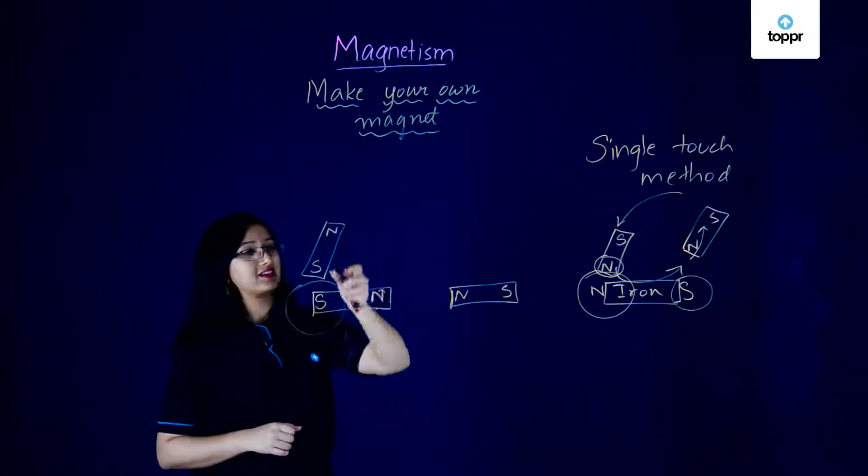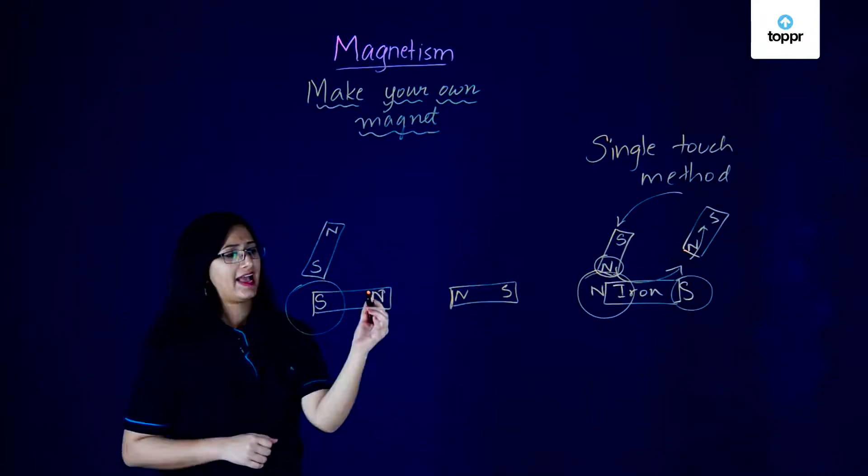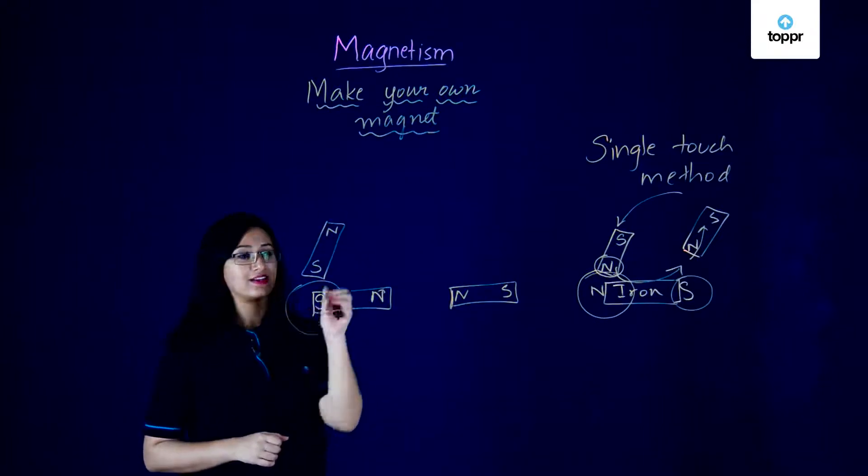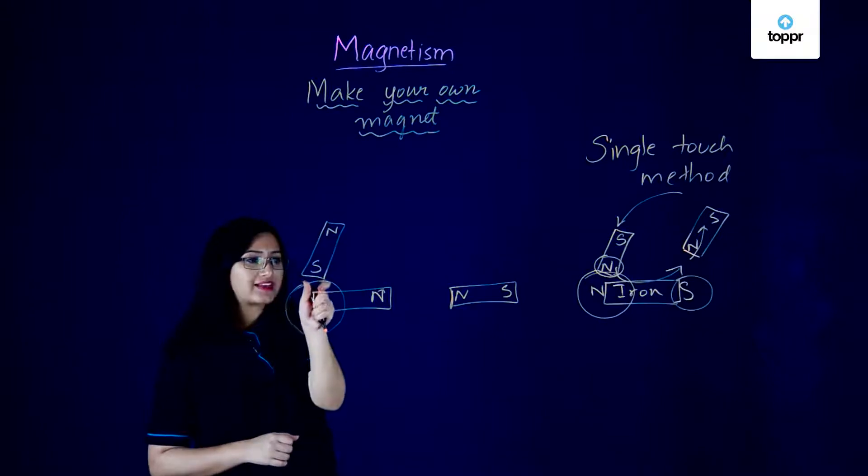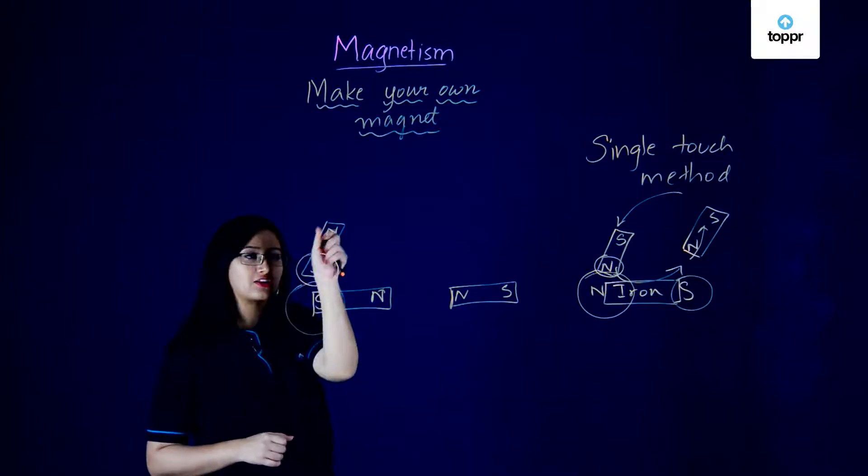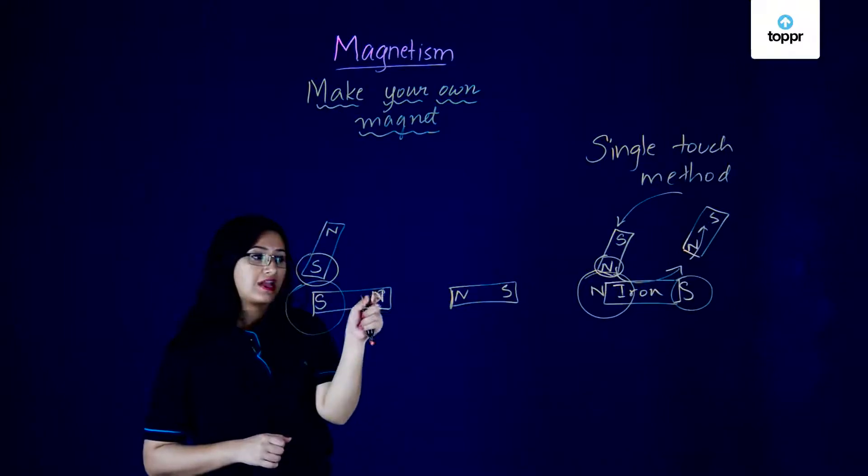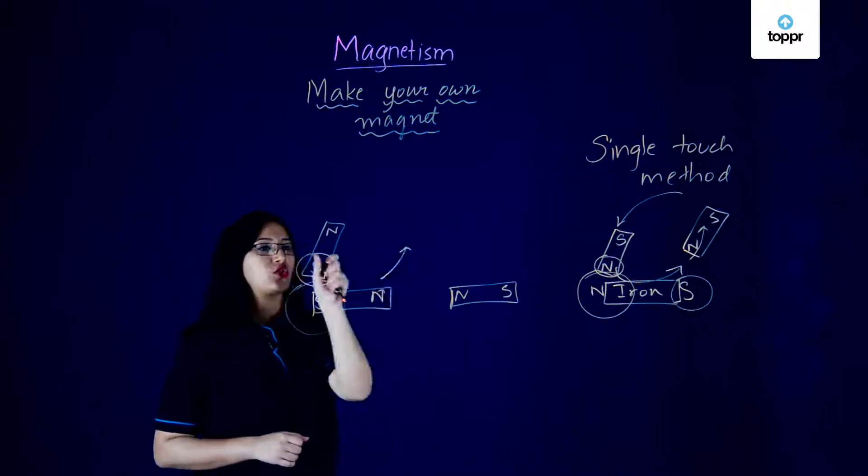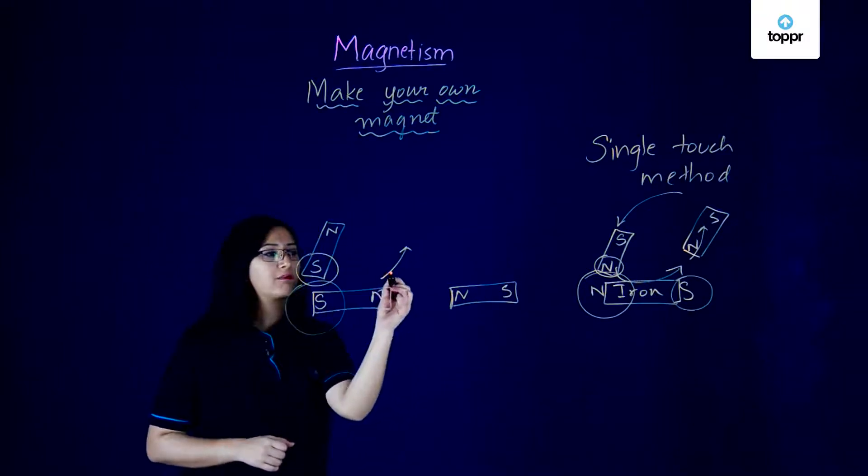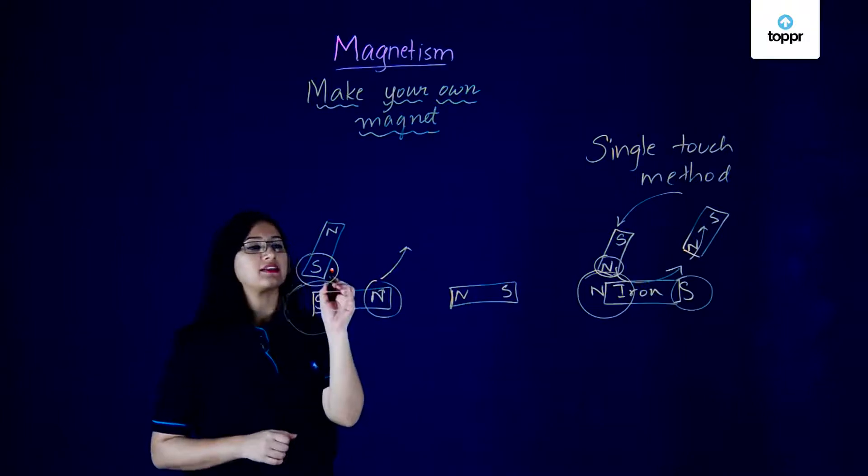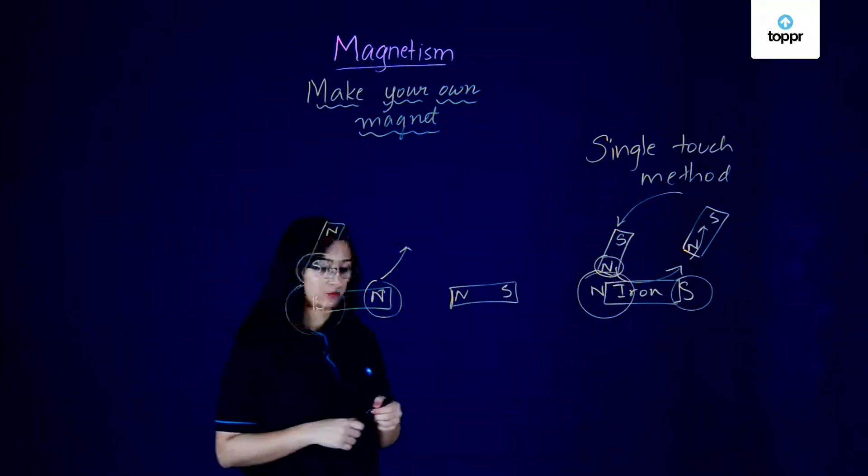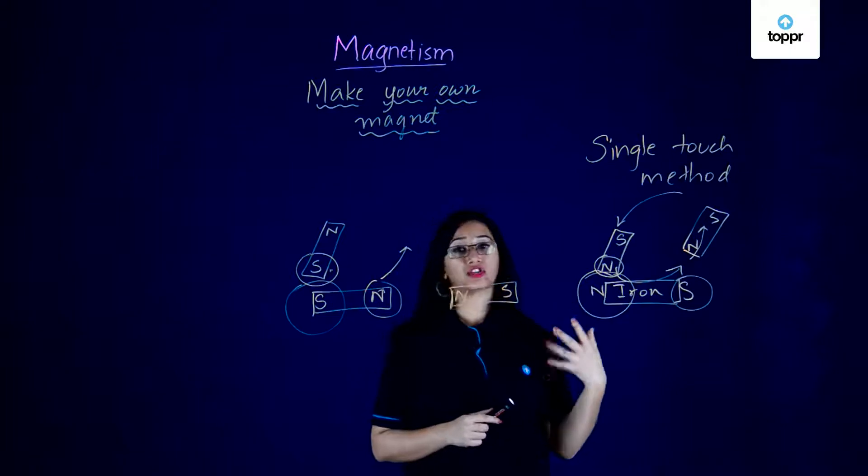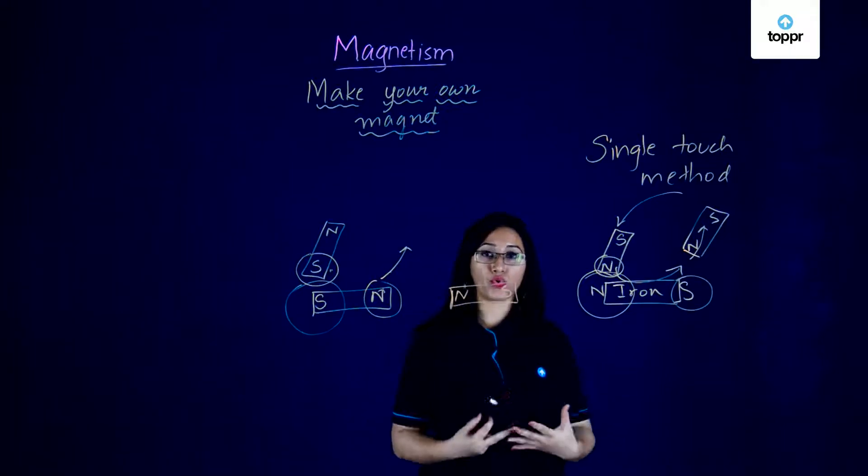So using the single touch method, the end where you're hitting or striking the material first will have the same pole as that of your point by which you're striking the magnetic material and the point at which you're removing or taking away your magnet will have a pole opposite to that of your magnetic pole. So this was one method in which you can actually create a magnet on your own.